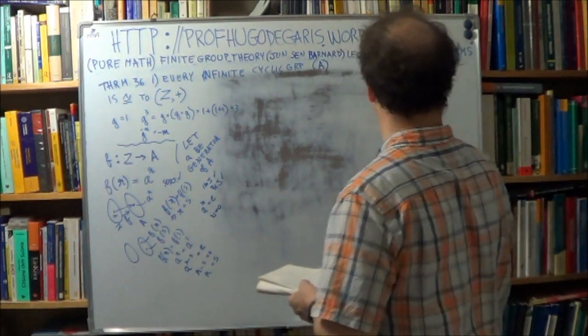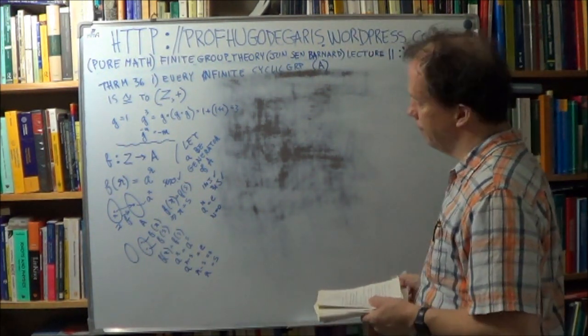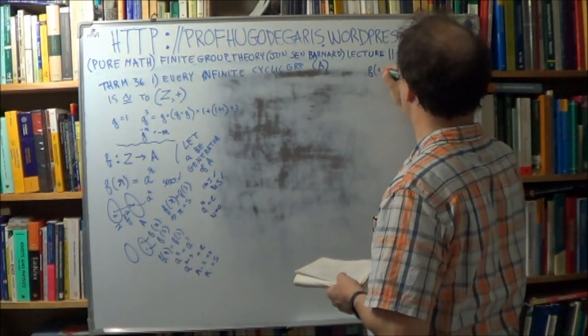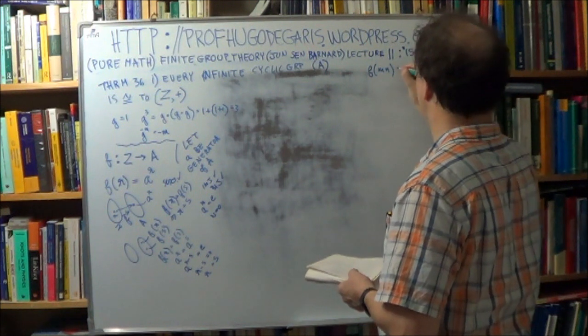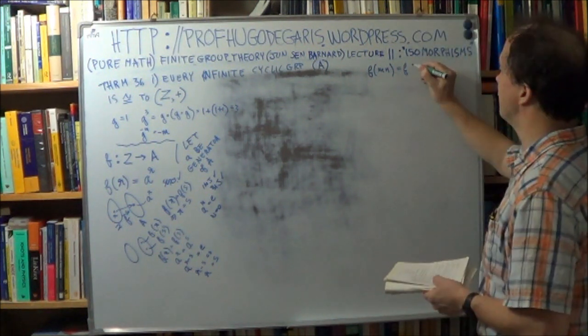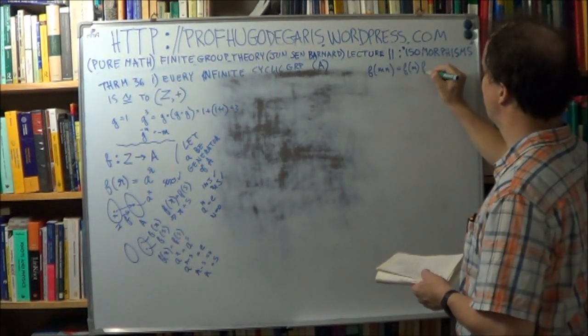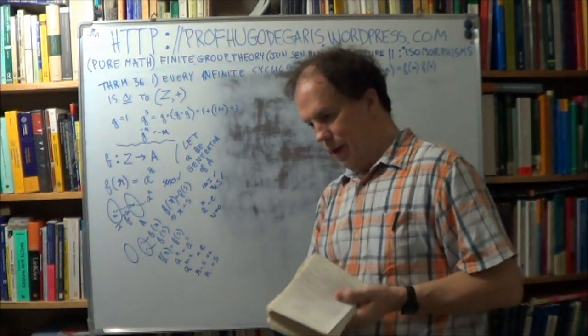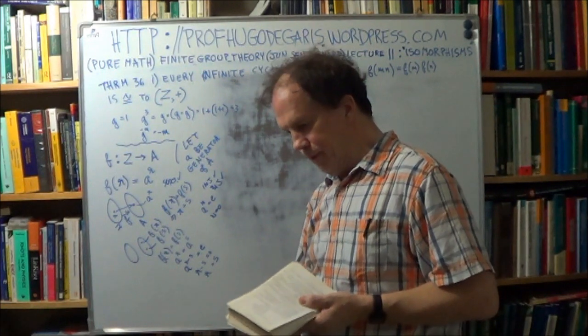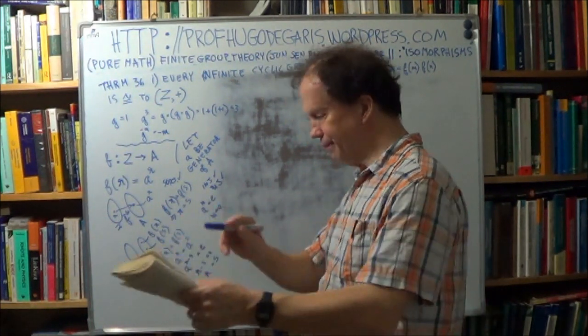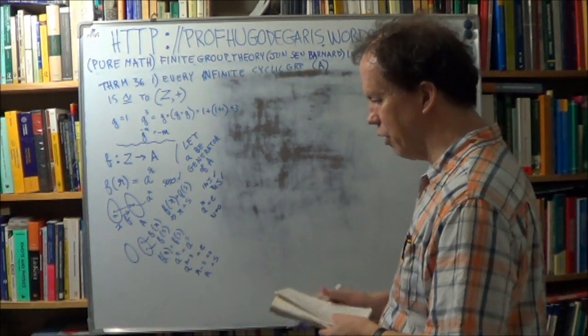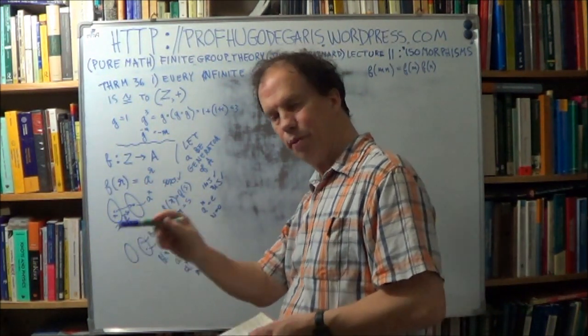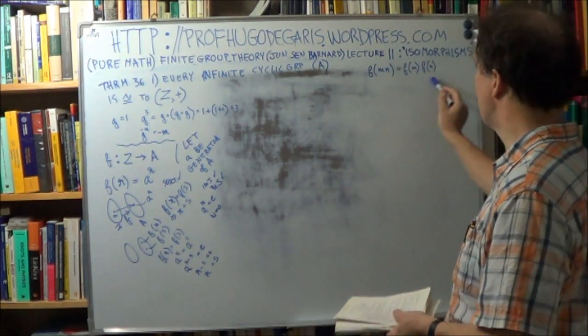Now, now we have to do the, like, f of m n is f of m, f of n, right, to prove the isomorphism, that the corresponding elements in the table pair, pair off appropriately, they map appropriately, so we have to show this.